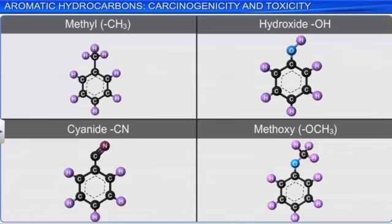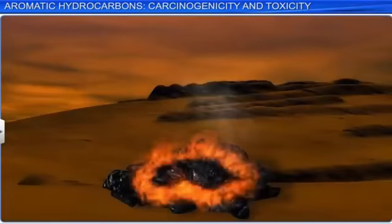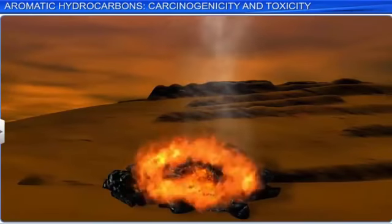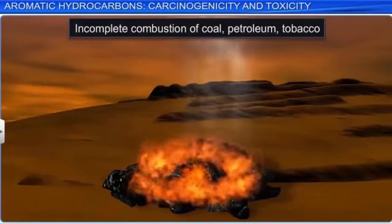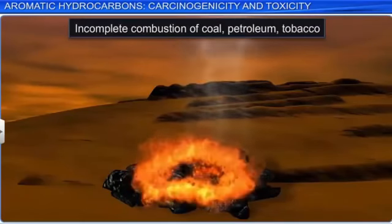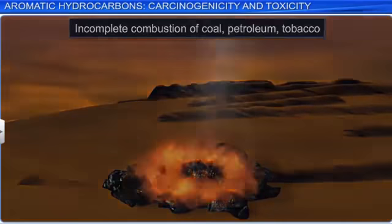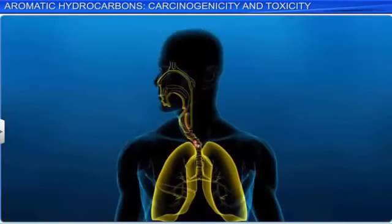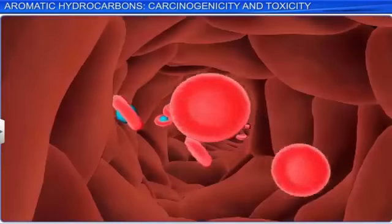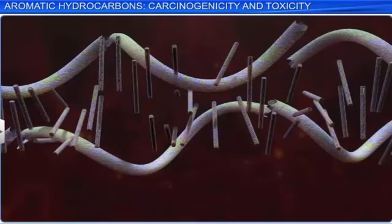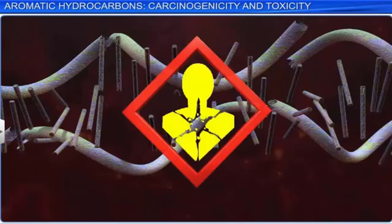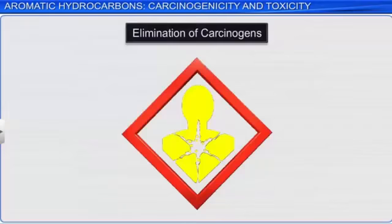These polynuclear aromatic hydrocarbons enter the environment due to the incomplete combustion of coal, petroleum, tobacco, etc. On entering the human body, these compounds undergo various biochemical reactions and damage DNA. This causes a sudden change in the DNA structure, leading to cancer. The elimination of carcinogens from the environment can reduce the incidence of cancer to a great extent.